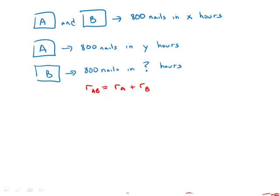And so the rate of the two machines working together, 800 nails in X hours, that's job 800 divided by time, 800 over X. The rate of A working by itself is 800 over time Y. And I'm going to say, why don't we call this H, the unknown hours that we're looking for. Call that letter H. 800 over H is the rate of B working by itself.